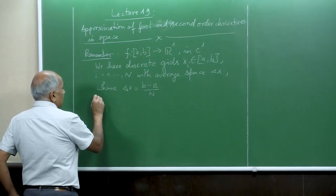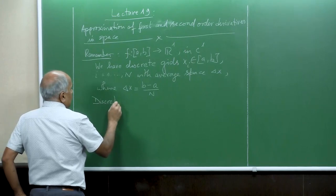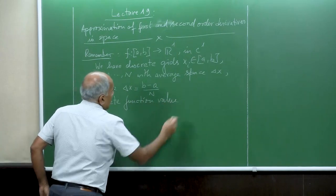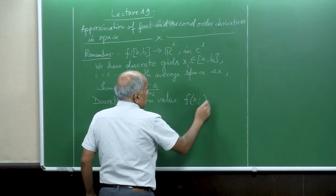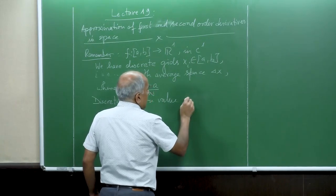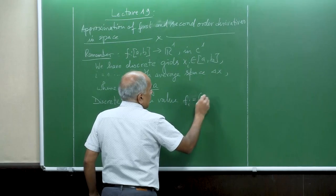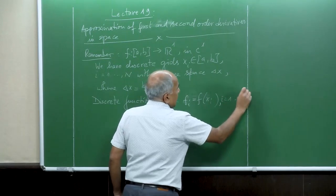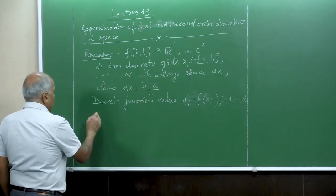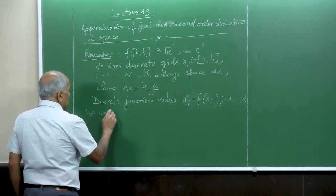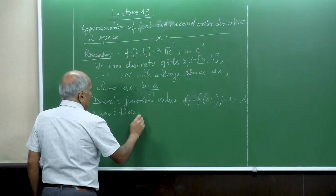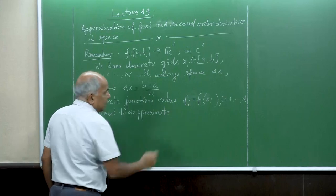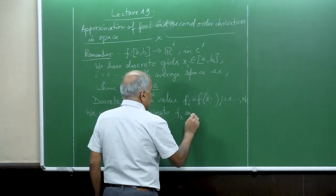Our discrete function values are: f_i equals f of x_i, for i equal to 1 to N. Now we want to approximate f_x and f_xx.